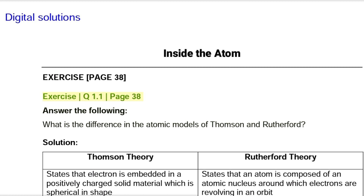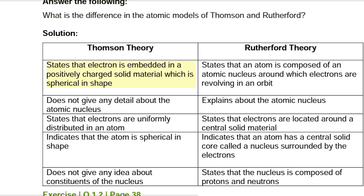Exercise Q1.1, page 38. Answer the following: What is the difference in the atomic models of Thompson and Rutherford? Solution: Thompson's theory states that electrons are embedded in a positively charged solid material which is spherical in shape. Rutherford's theory states that an atom is composed of an atomic nucleus around which electrons are revolving in an orbit.